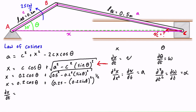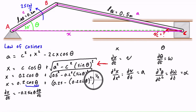Taking the time derivative of both sides: on the left we get dx/dt. For the first term, 0.2 is constant and the derivative of cosθ is −sinθ, giving −0.2·sinθ. By the chain rule we must also multiply by the derivative of theta, which is dθ/dt.